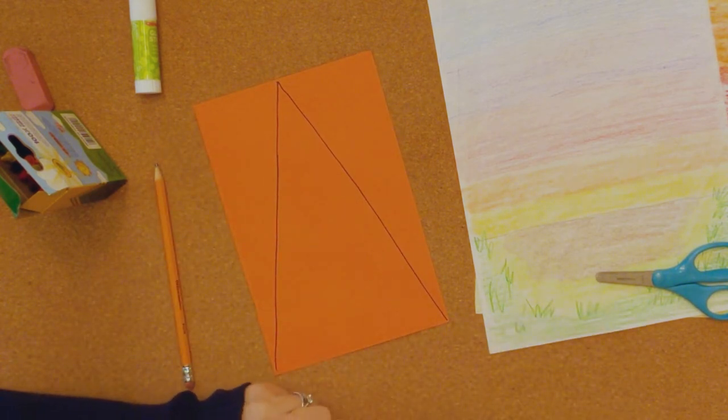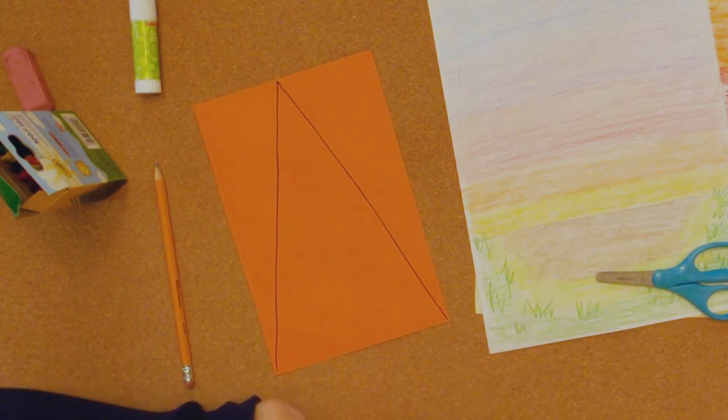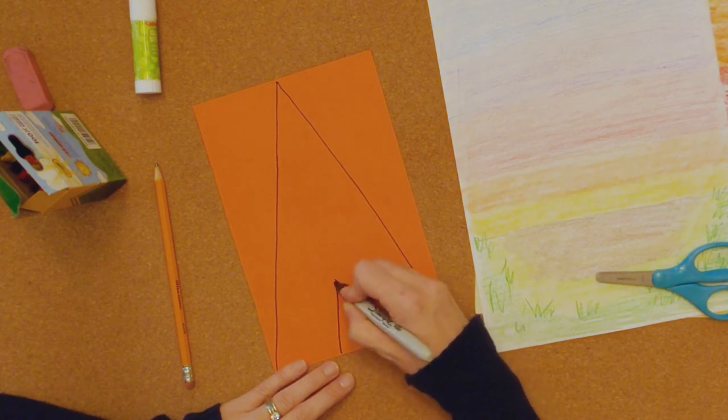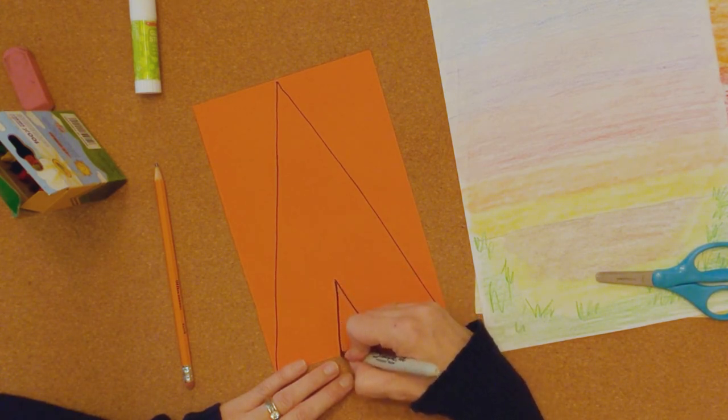Okay, then we're going to put some patterns and some designs on our teepee. So before we do that, let's also draw a door. So we'll just draw another little triangle right in the front.